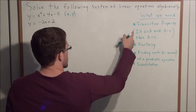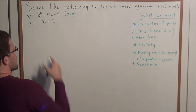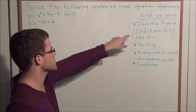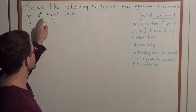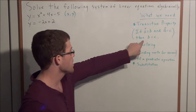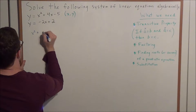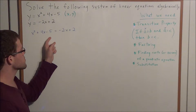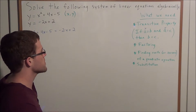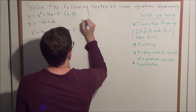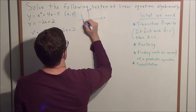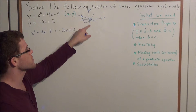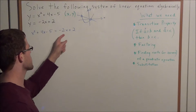Let's get started by using the transitive property of equality applied to this system of equations. Let a equal y, so if y equals x squared plus 4x minus 5 and y equals negative 2x plus 2, then x squared plus 4x minus 5 equals negative 2x plus 2. We're looking for a common pair of points satisfying both equations — in other words, where the parabola and the line intersect.